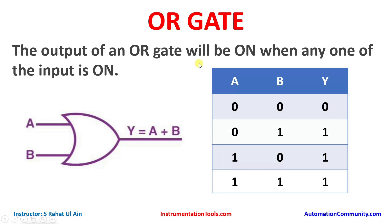The output of an OR gate will be ON when any one of the input is ON. As you can see in the table, when both the inputs are OFF, the output is also OFF. And when one of the input is ON, the output becomes ON. And when both the inputs are ON, the output is also ON.